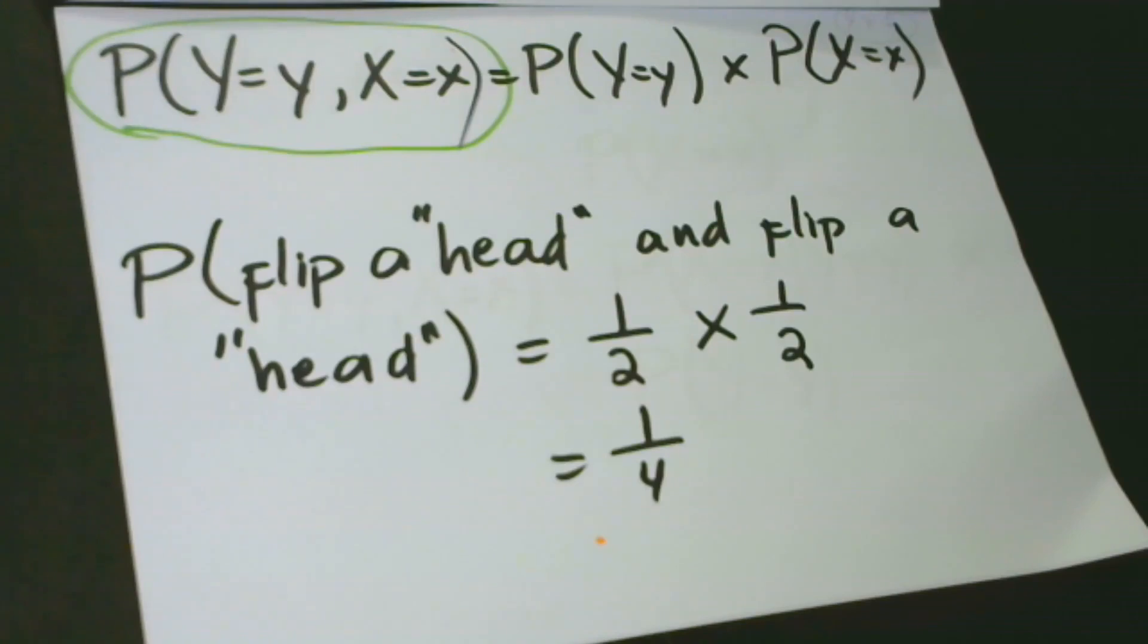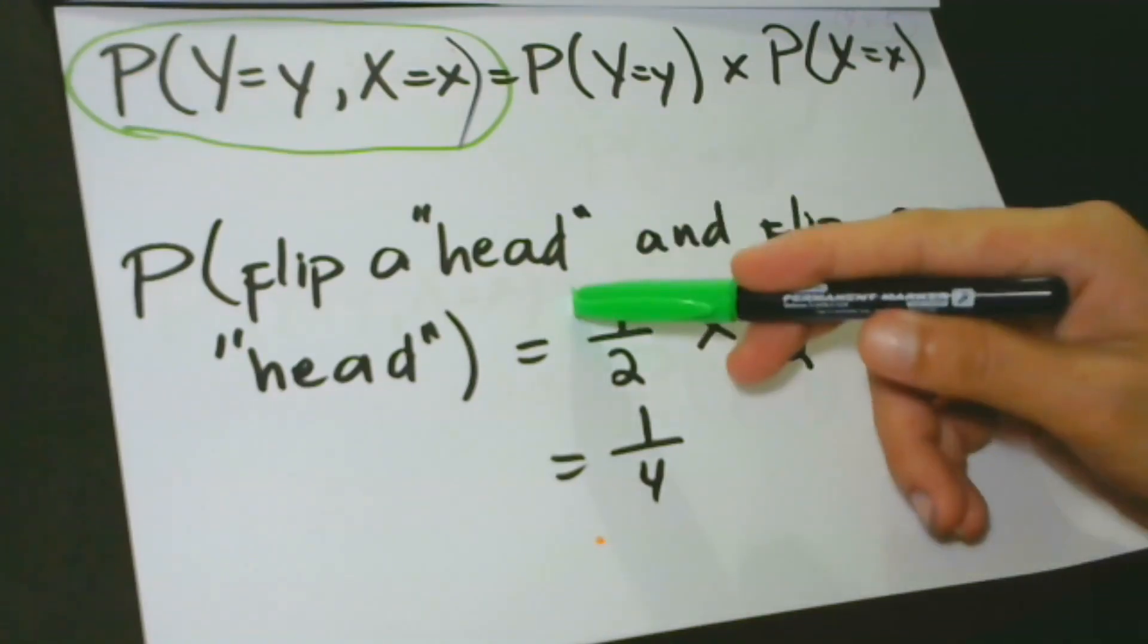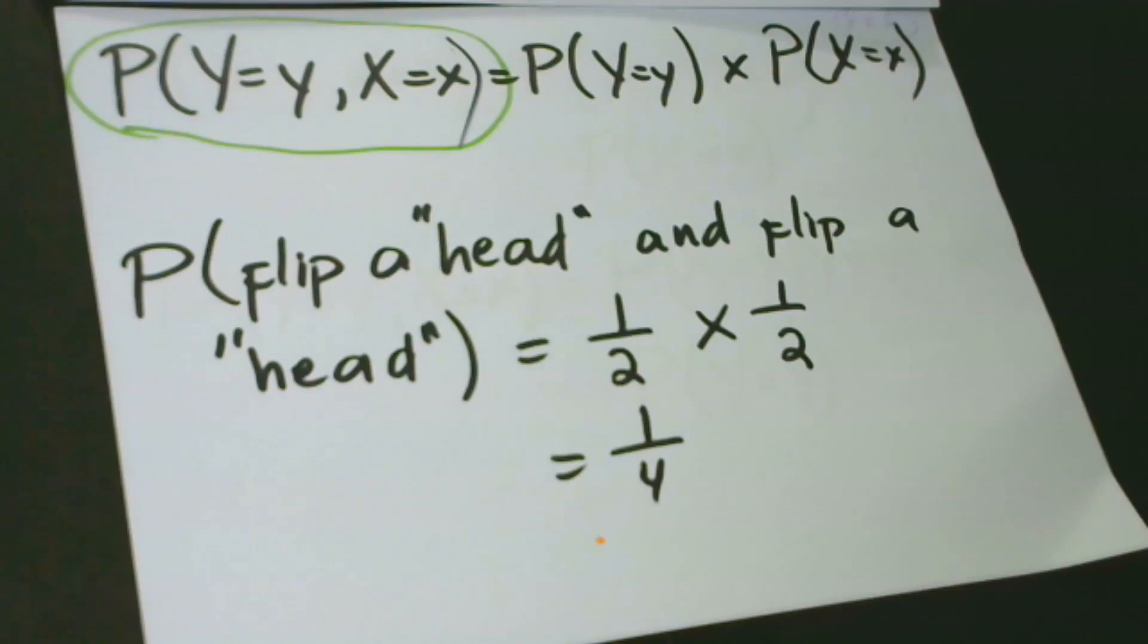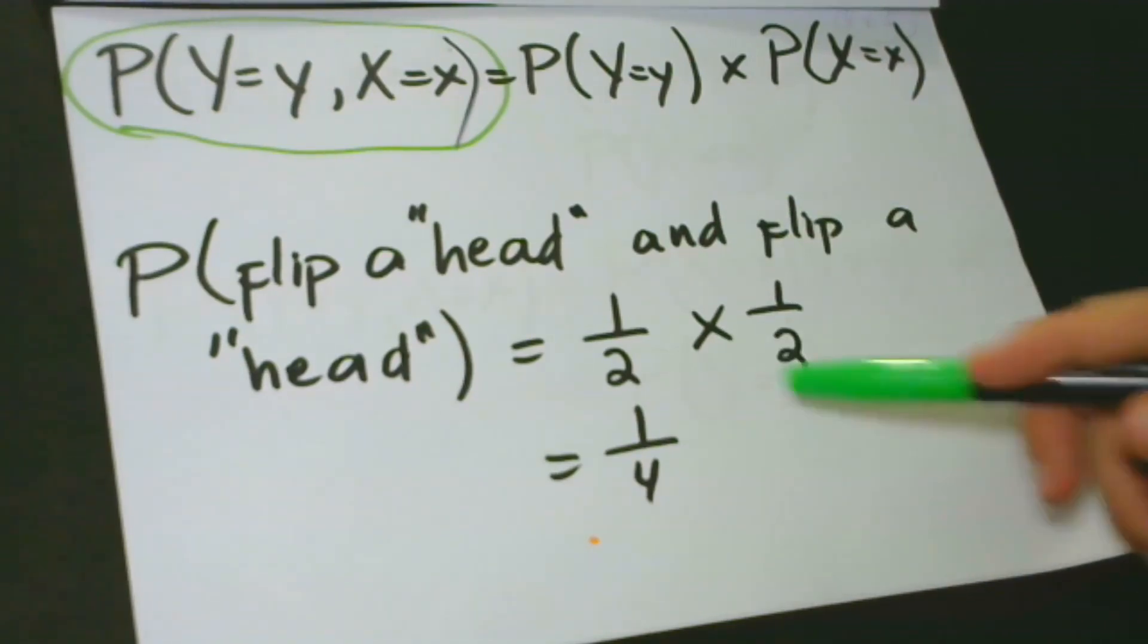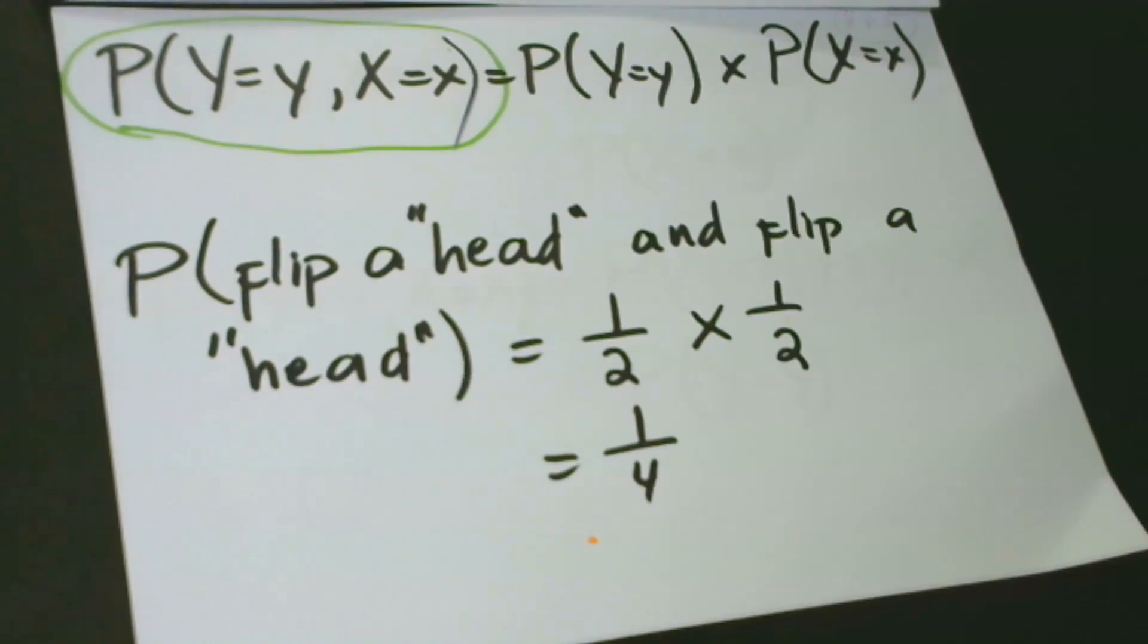That means the probability of getting a head and a head is one fourth. Since the probability of having an event for each is one half, by multiplying the probabilities of both events, we have one fourth. This is actually very simple, just to think of and then learn.